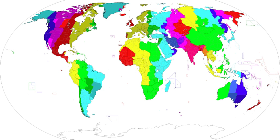A number of inhabited islands lie within the longitudinal limits of this time zone, but none of them keeps the date and time of UTC–12. Instead, they keep the time and date of one of the neighboring zones, usually because they belong, politically, to an island group whose other members lie mostly in the neighboring time zone.